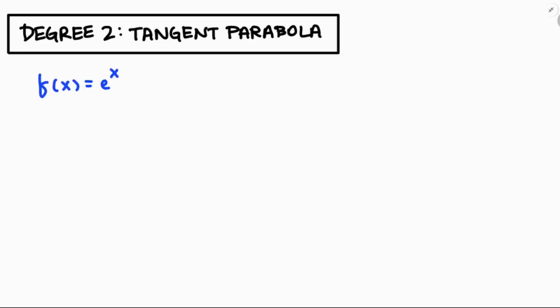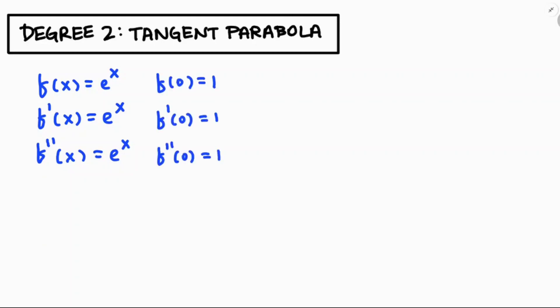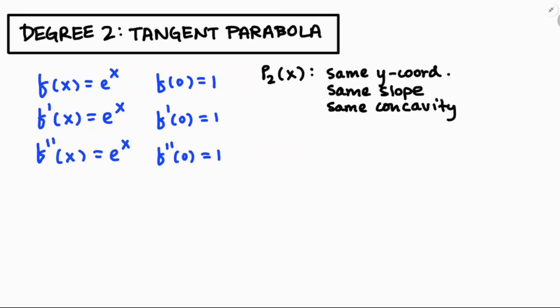Now let's repeat the process with a parabola. All derivatives of e to the x are e to the x, so plugging in x equals 0 gives 1 every time. For the tangent parabola p₂(x), just like the tangent line it needs the same y-coordinate and the same slope, but we also want the same concavity — that's the advantage of using a parabola, it curves.